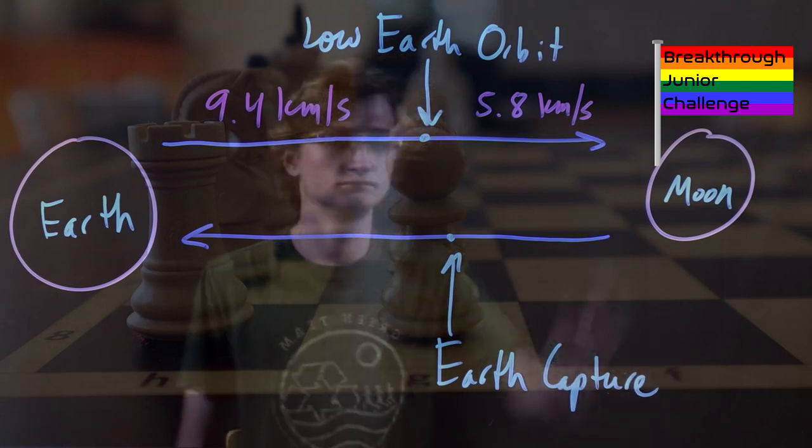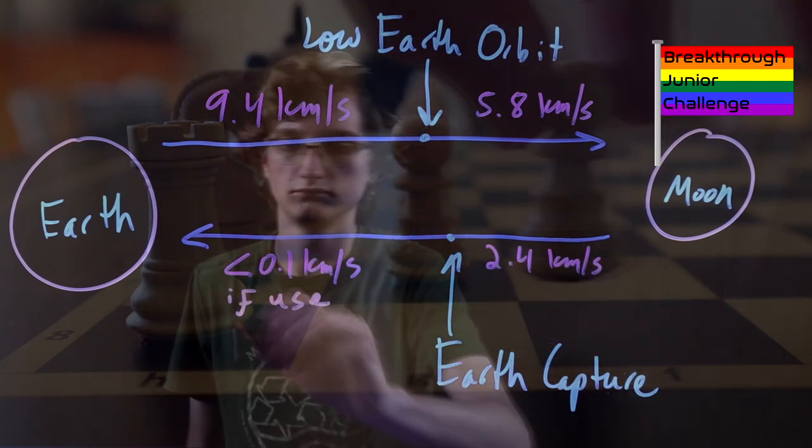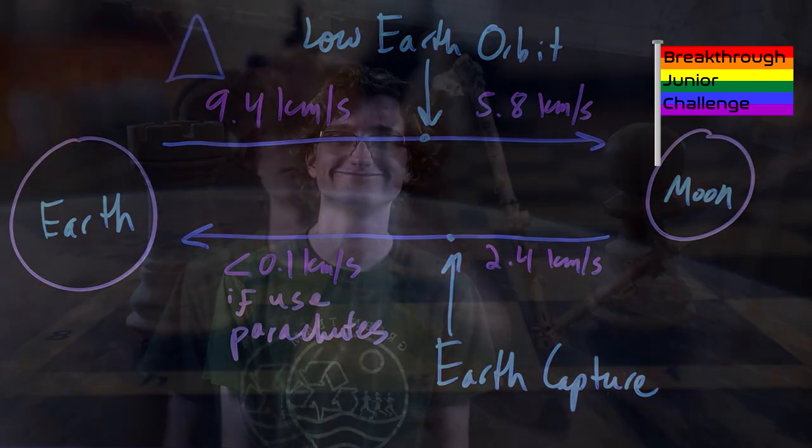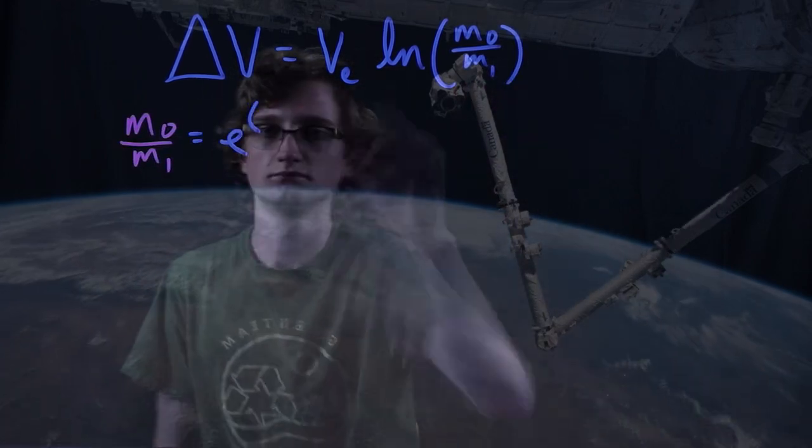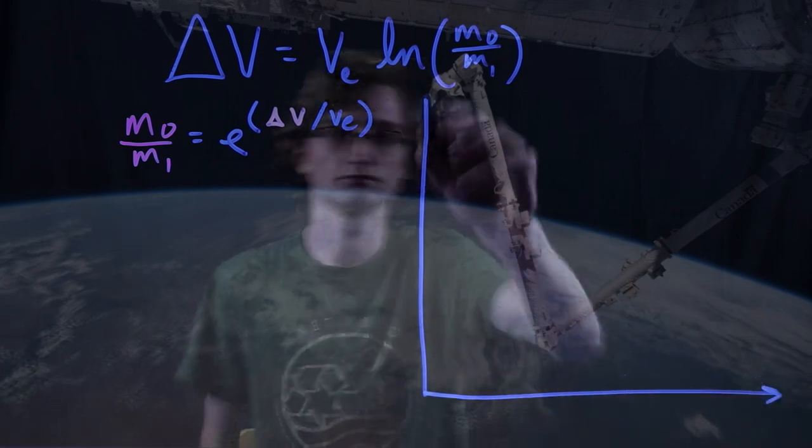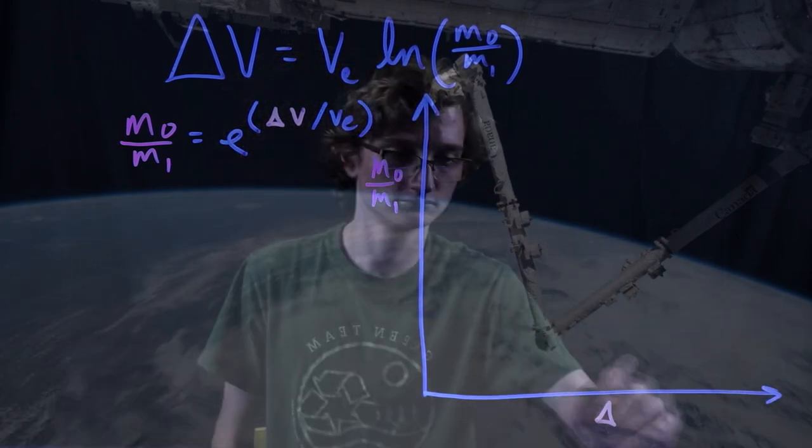It's a bit like chess, where delta V is how many squares you can move your piece. It's a testament to our abilities that we can express the very key to reaching the cosmos in one equation. However, that equation confines us to play by a very limited set of rules.